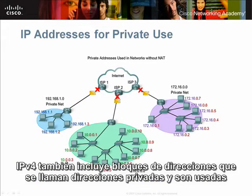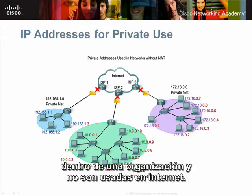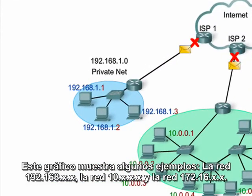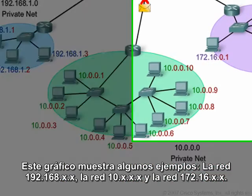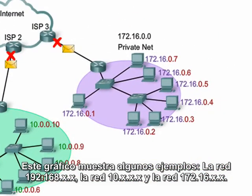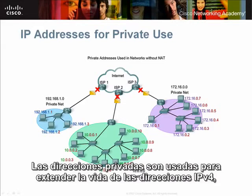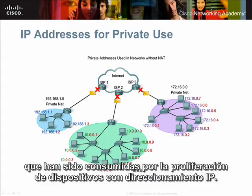IPv4 also includes blocks of addresses called private addresses. These addresses are designed to be used within an organization and are not used on the Internet. Examples include the 192.168 network, the 10 network, and the 172.16 network. Private addresses are used to extend the life of the IPv4 address space, which has been consumed by the proliferation of IP addressable devices.